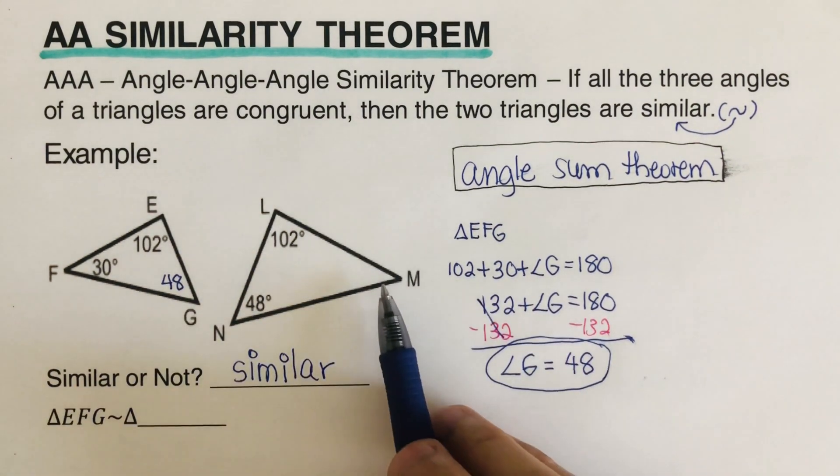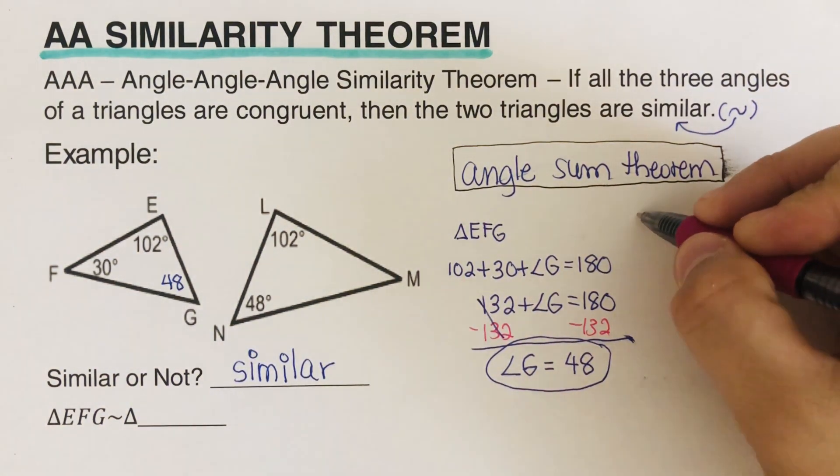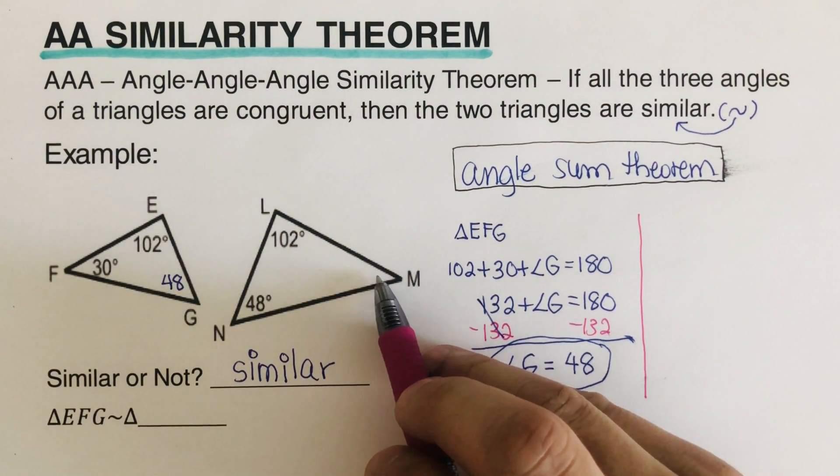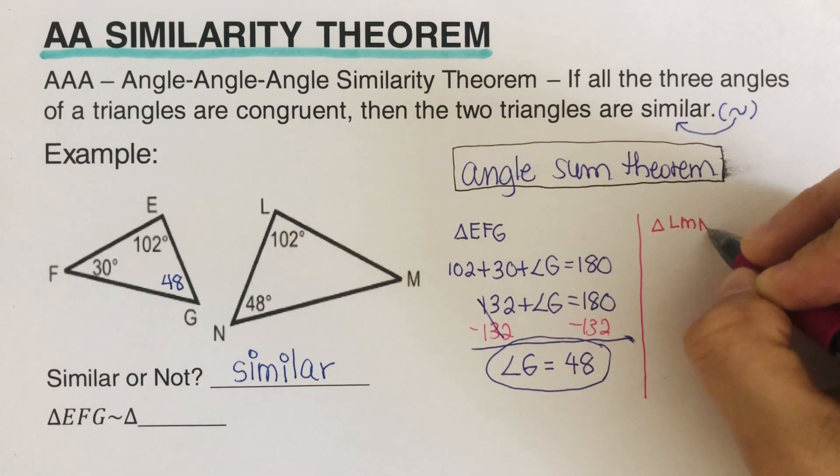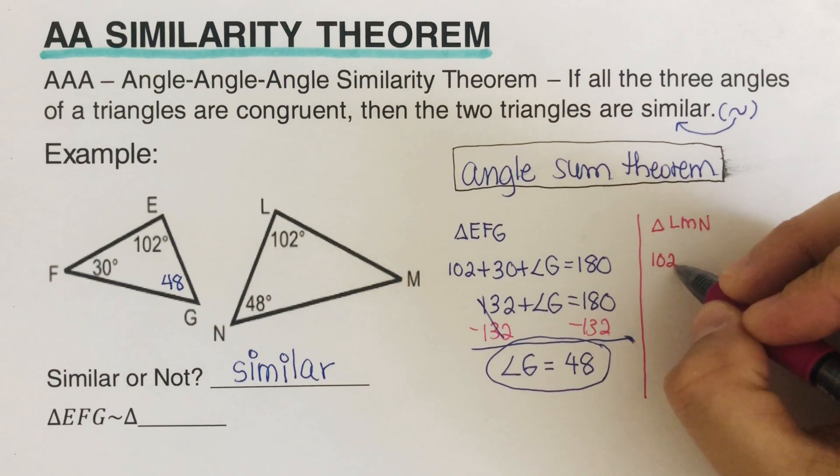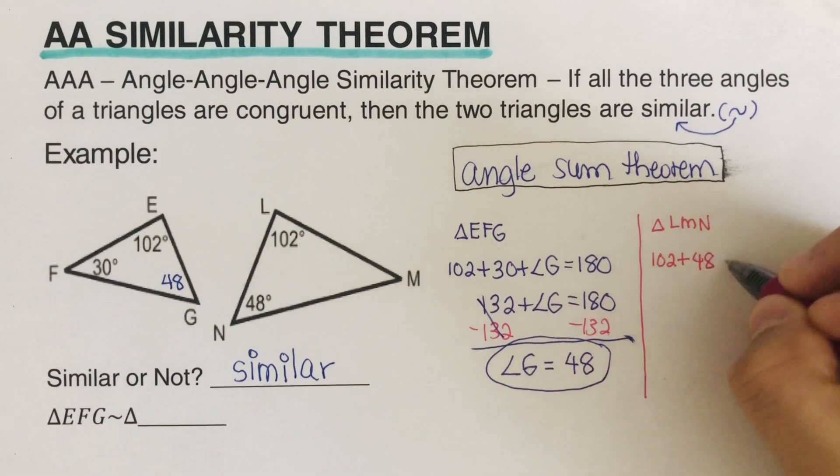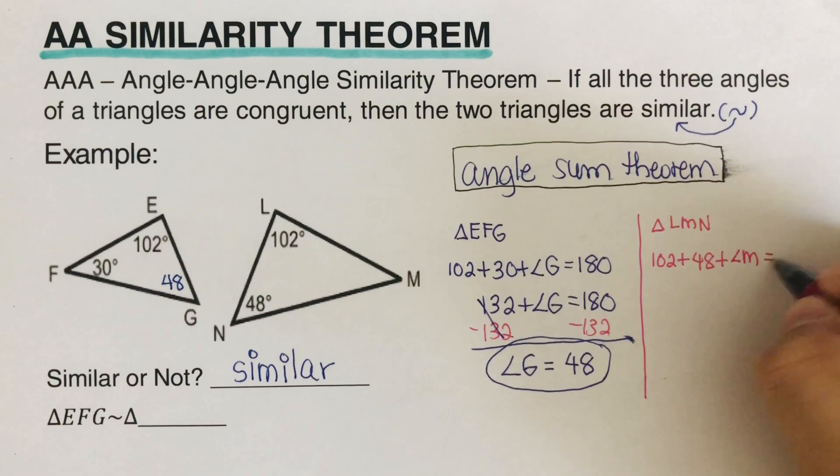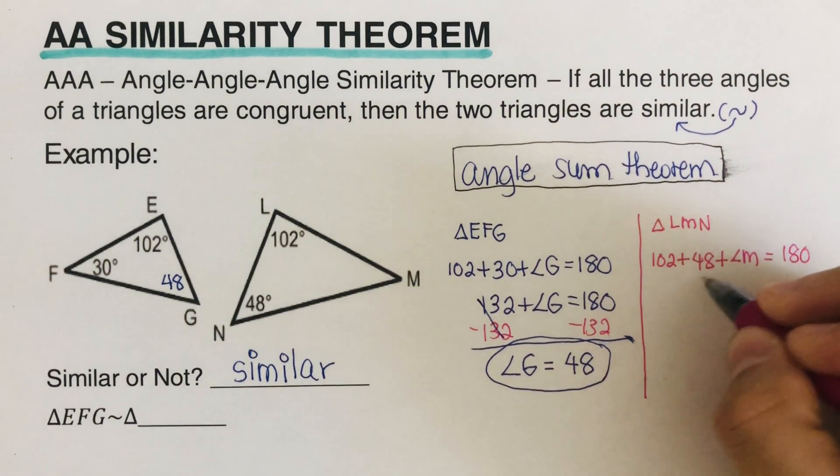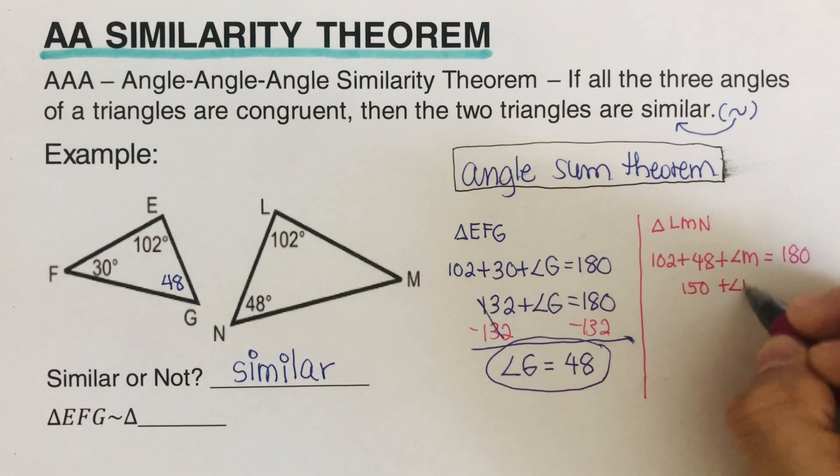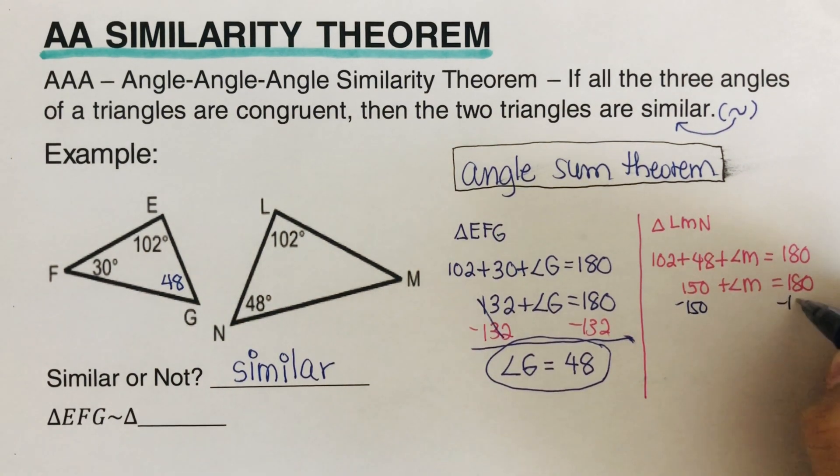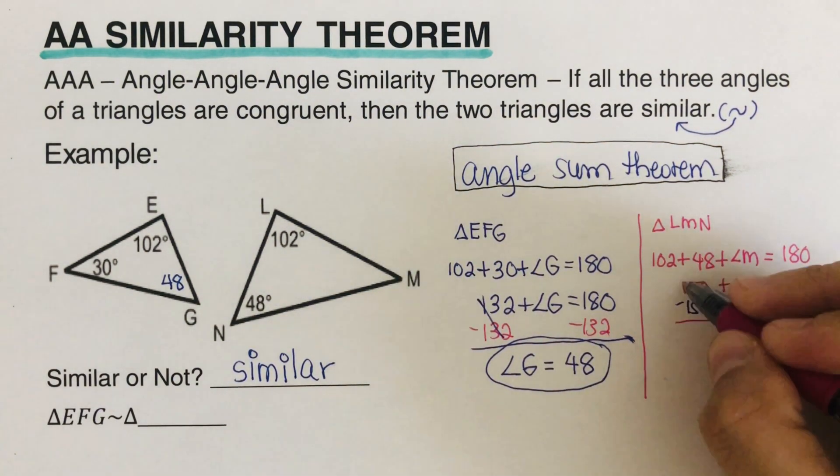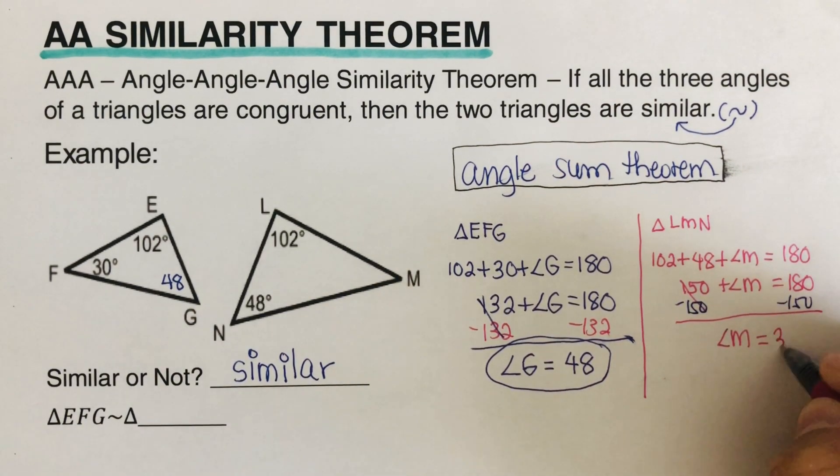Now if you would want to know what the measure of the other triangle, I mean the other angle for this triangle is, we can do that and I'll show the work for the measure for this angle over here. So this will be for triangle LMN. So again, that would be 102 plus 48 plus angle M equals 180. And so this is 150 plus angle M equals 180. So subtract 150 from both sides minus 150. So then we are left with measure of angle M is equal to 30.